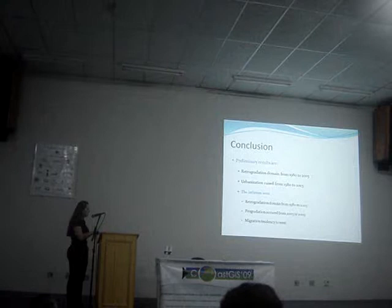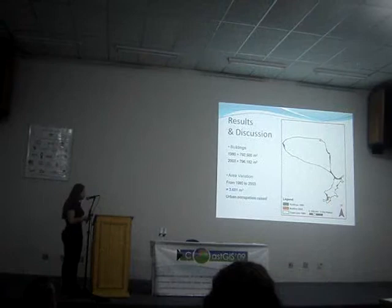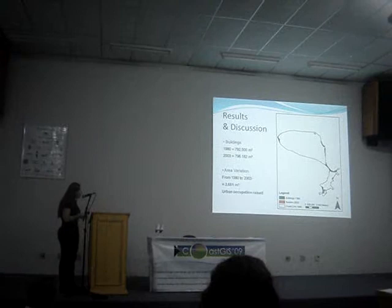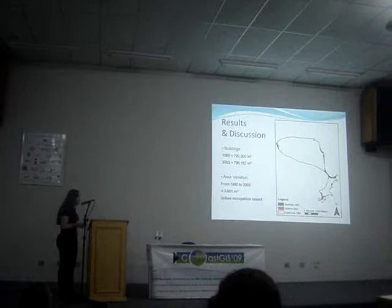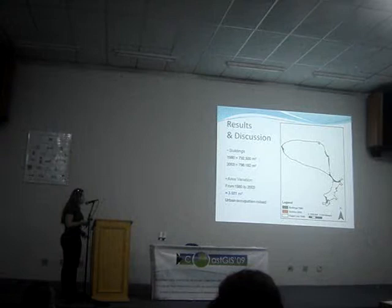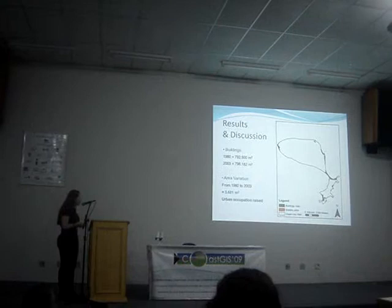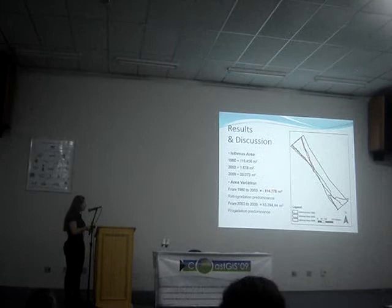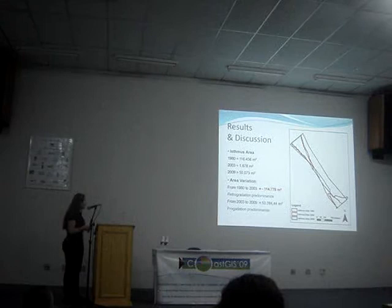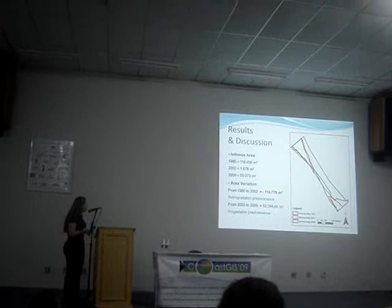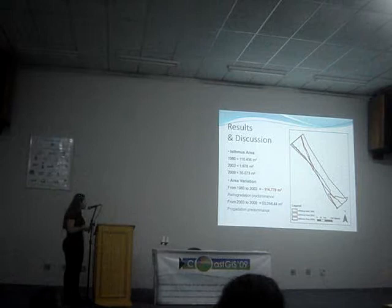Looking at buildings and urbanization, from 1980 to 2003 we see an increase in urban occupation. The urban area in 1980 is shown in red and green, while 2003 is shown in orange. In the Isthmus area, the green shows the extent in 1980 — there used to be houses and schools in these places.